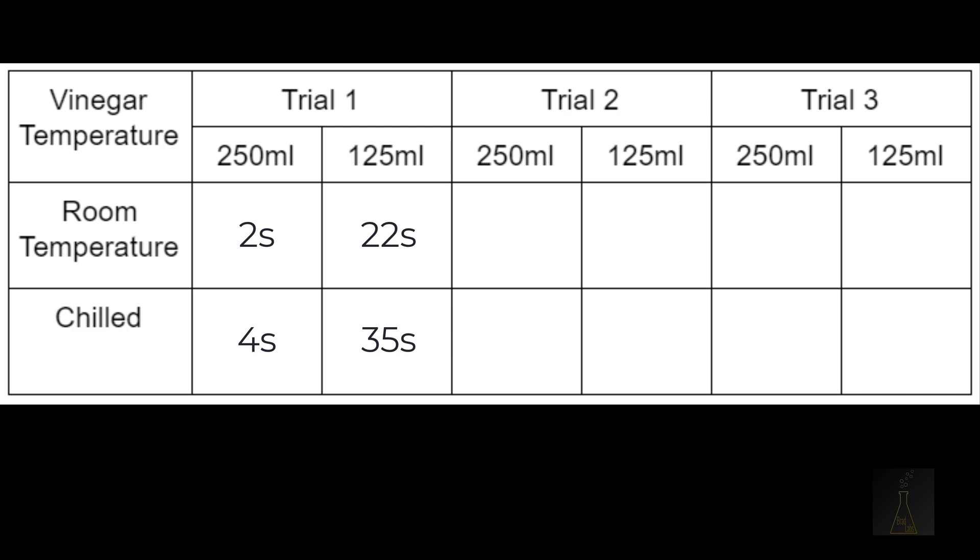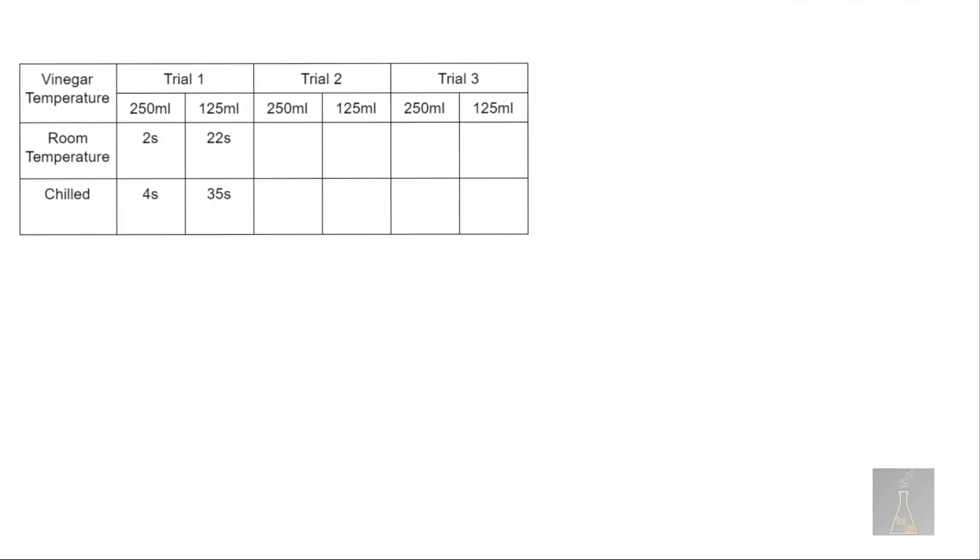So now we need to think about what this data means. Because we took 4 pieces of data from one single trial, there's a lot that we can learn from this experiment. For example, I can see that it took twice as long for our chilled baking soda and vinegar to reach that 250 milliliter mark as it did our room temperature baking soda and vinegar. I can also see that while it took 35 seconds for our chilled baking soda and vinegar to bubble all the way up and then come all the way down to that 125 milliliter mark, it took only 22 seconds for the room temperature baking soda and vinegar to do the same thing.